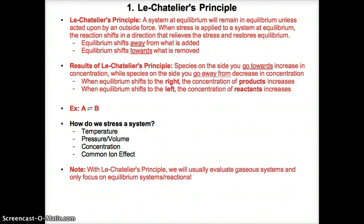Consider the equilibrium reaction A on the left in equilibrium with B on the right. If A is added, equilibrium will shift to the right away from A so that the system can consume A as if it were a reactant and produce B as if B were a product. This lowers A's concentration back to equilibrium levels, while B's concentration increases.